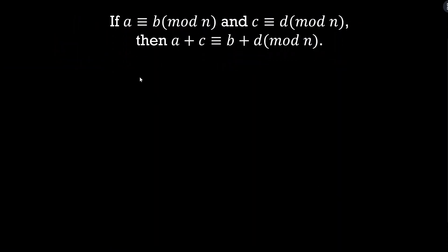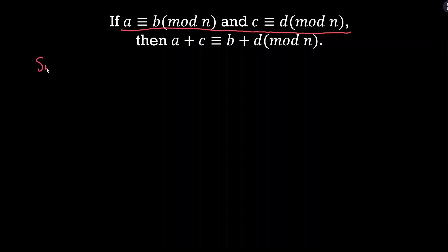With this statement, before we start writing the proof, make sure you think about what it means, what it's saying, and why it's true. For the proof, I'm going to jump right into it using the direct proof method. We're going to assume the if part of the statement is true. This if part is a conjunction — we're making two assumptions here. Suppose that A is congruent to B mod N and C is congruent to D mod N.